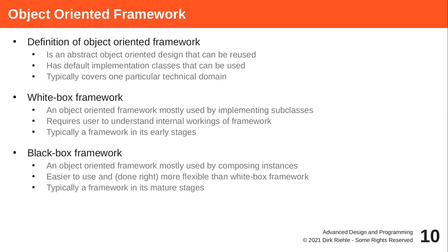An object-oriented framework is an abstract design that matches a particular application domain or technical domain, together with classes that represent this design. It gives you a design to reuse, and object-oriented classes that implement the design, so you get not only design-level reuse but also code reuse. Frameworks can really be about everything where there is a coherent design to be had — the design comes first, and then comes an implementation by way of object-oriented classes.